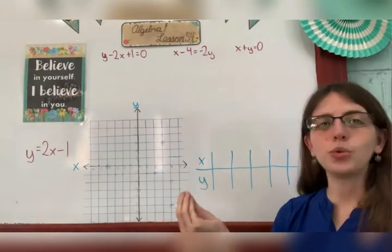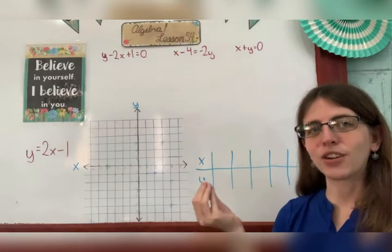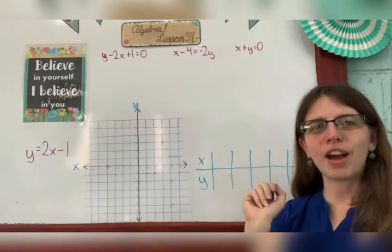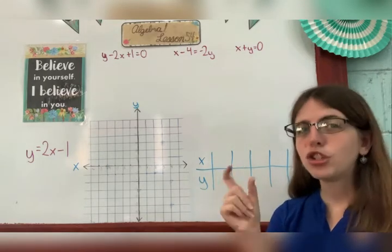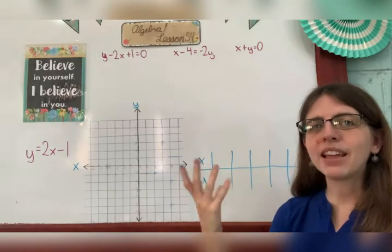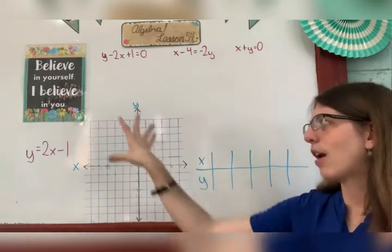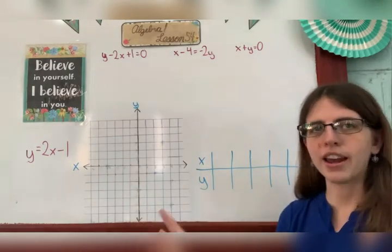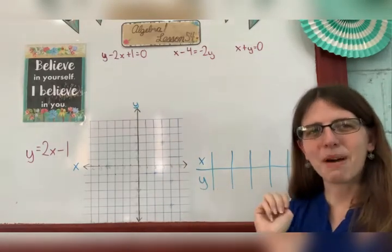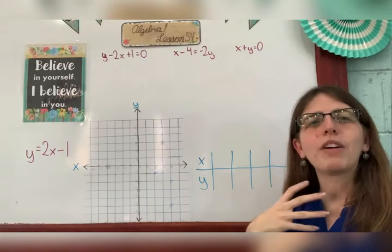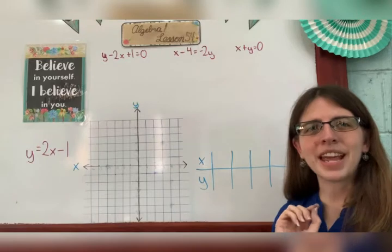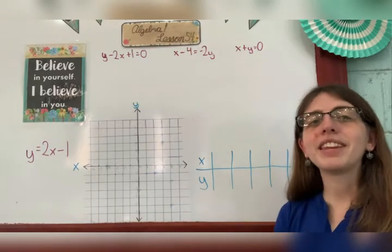We get to choose the values for x — it's our independent variable. Two things to keep in mind when choosing your values for x: don't make them too close together, and don't make them too big, or you'll end up with answers outside of the graph you've drawn. Also, choose values that are convenient and easy to use. That will especially come in handy if you have fractions, which you will see in the next example.